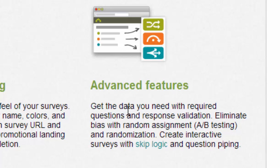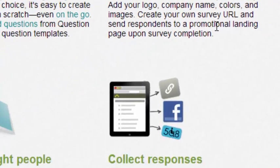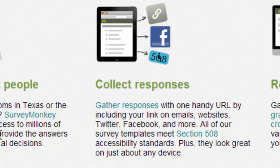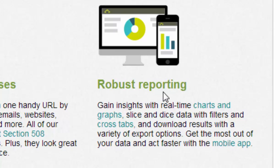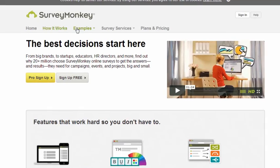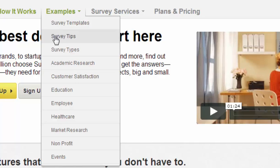Advanced features include AB testing, randomization, and various logic you can apply to questionnaires. Under 'Reach the right people,' they discuss geo-targeting and demographic targeting, which I imagine is a paid service on top of their plans. Collect responses covers the various ways to run surveys through websites, Facebook, and email marketing. Robust reporting means they create charts and graphs from the surveys you put out there.